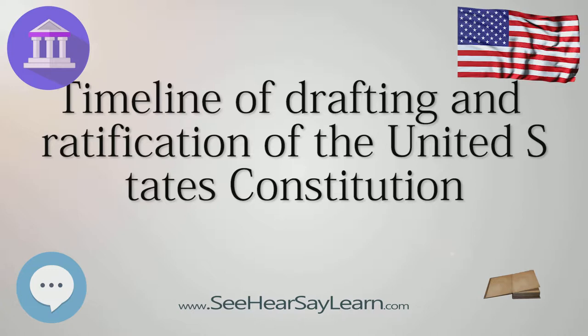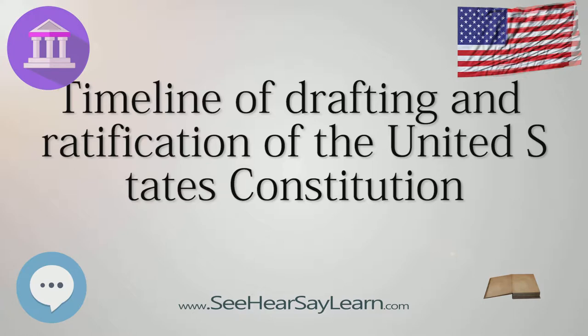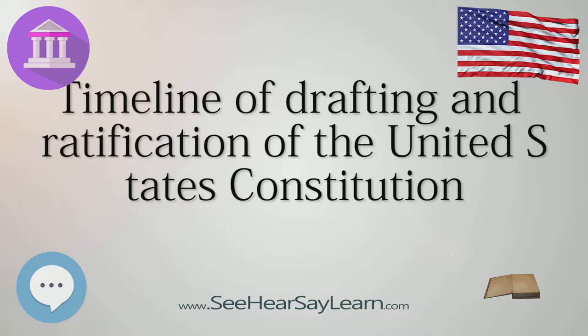May 29: The Virginia Plan, also known as the Large State Plan or the Randolph Plan, for structuring the federal government is presented by Edmund Randolph. May 29: The Pinckney Plan for structuring the federal government is presented by Charles Pinckney.